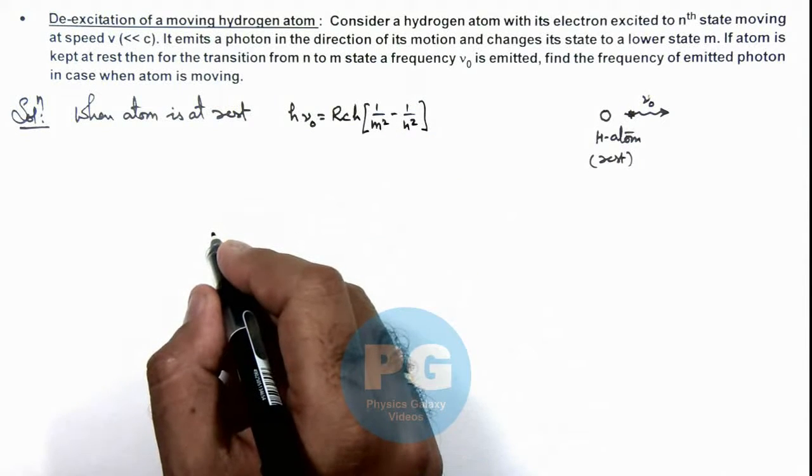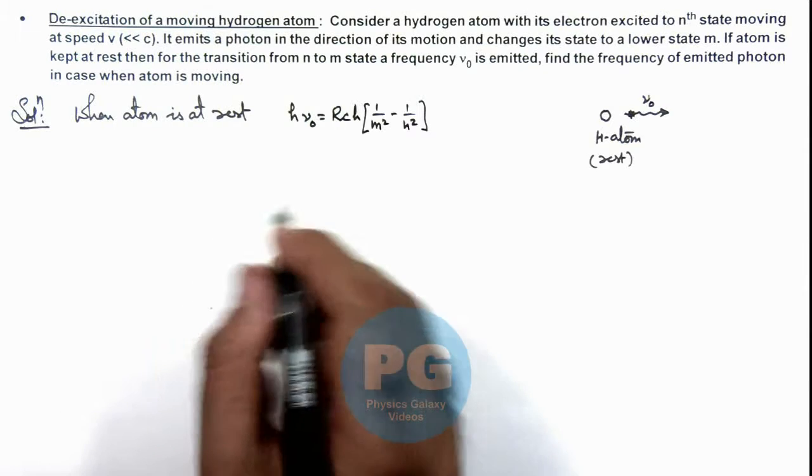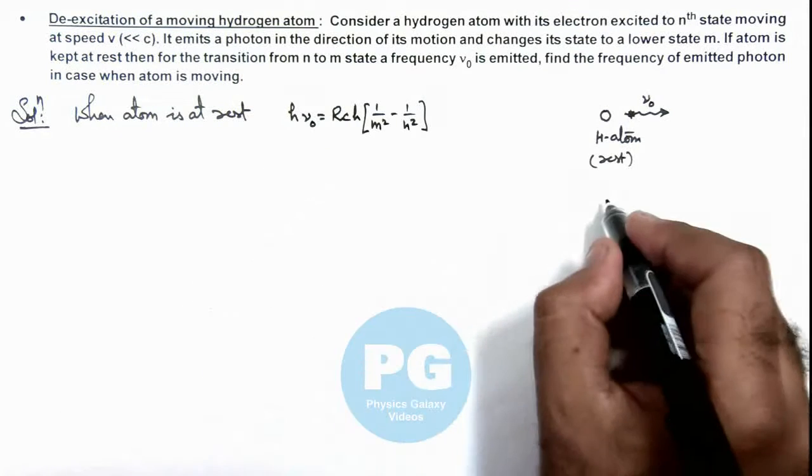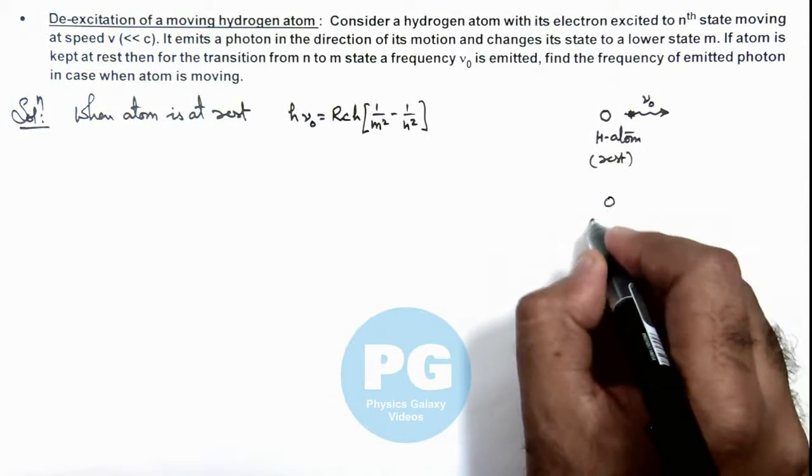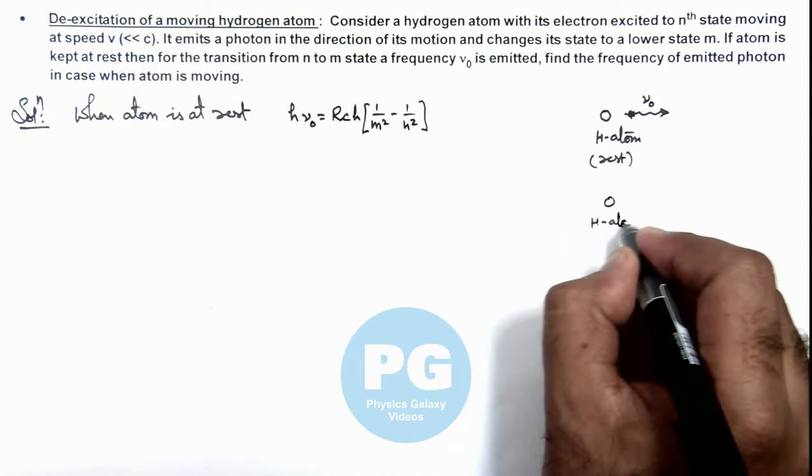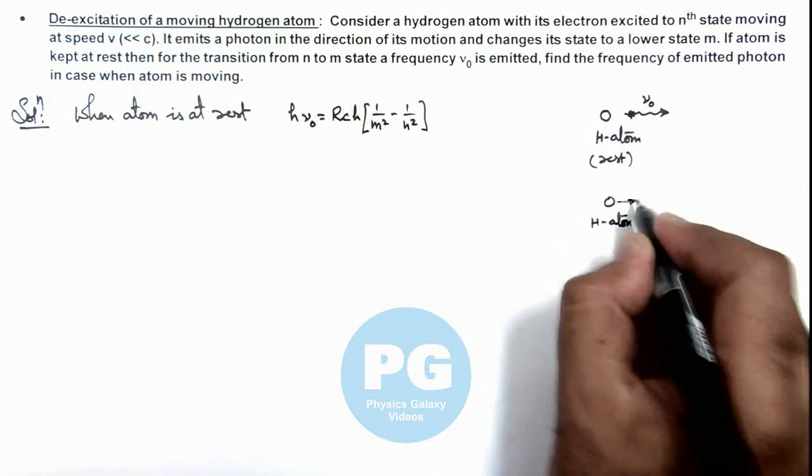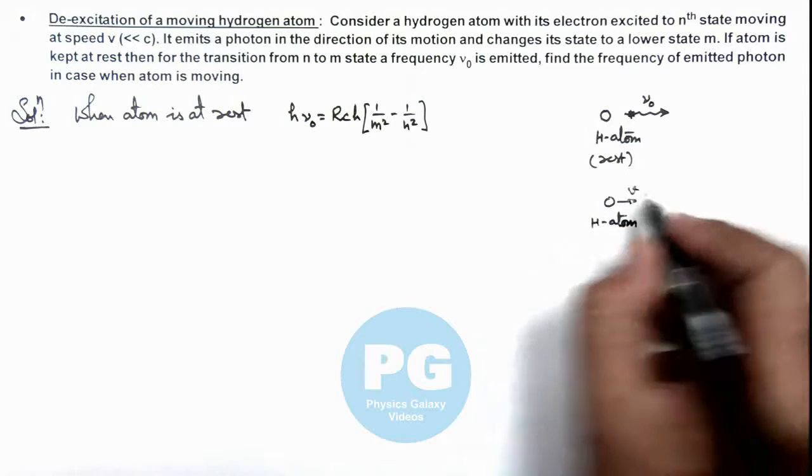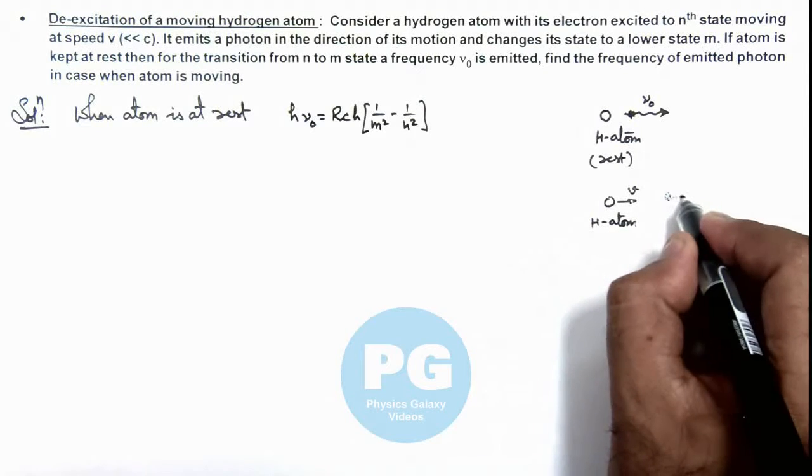And in this situation when the atom is moving, then the situation would be like this: the hydrogen atom is considered to be in motion with a speed v, and when it emits a photon in the direction of motion.